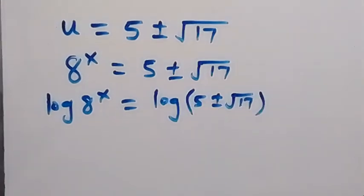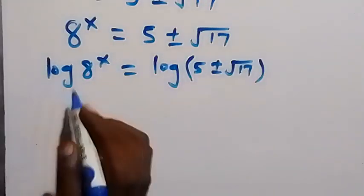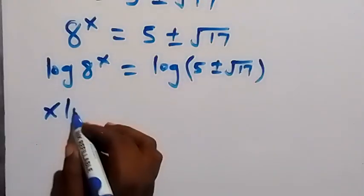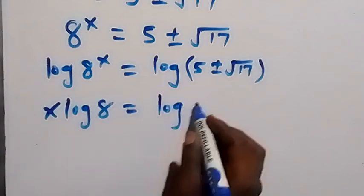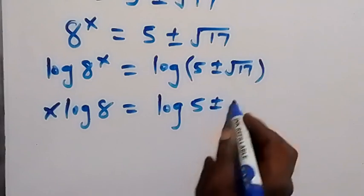we apply the power law of logarithm. This x we take it to the front here. We have x log 8 which is equals to log 5 plus or minus square root of 17.